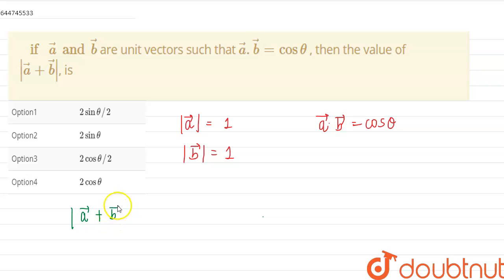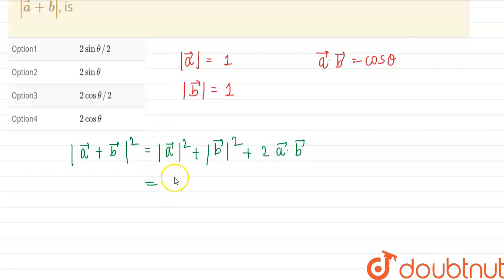b vector, so that can be done by squaring this. So this will be mod of a vector square plus mod of b vector square plus 2 times of a dot b. And this is 1 plus 1 plus 2 times of